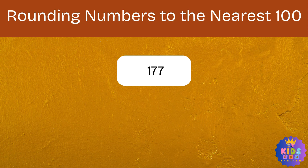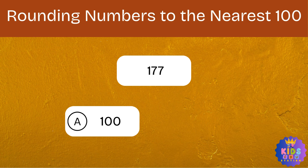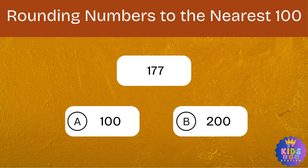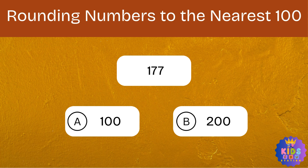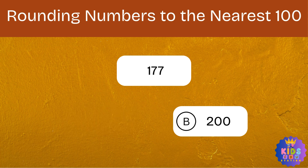Round 177 to the nearest hundred. Option A: 100. Option B: 200. And the correct answer is 200.